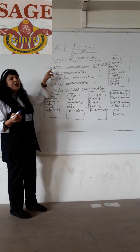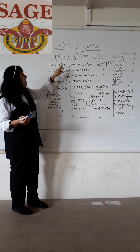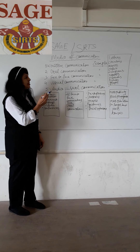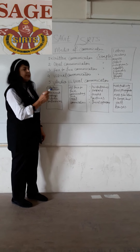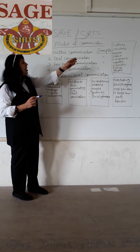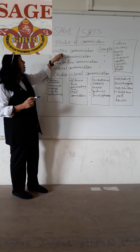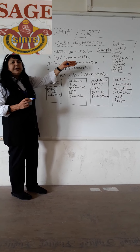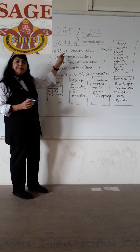When we are going to face an examination, at that time we use written communication. Written communication is related to letters, circulars, memos, orders, telegrams, reports, manuals, pictures, and graphs. All these are examples of written communication — we write all these things using written communication.